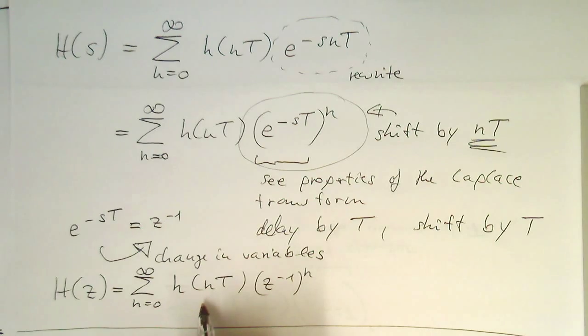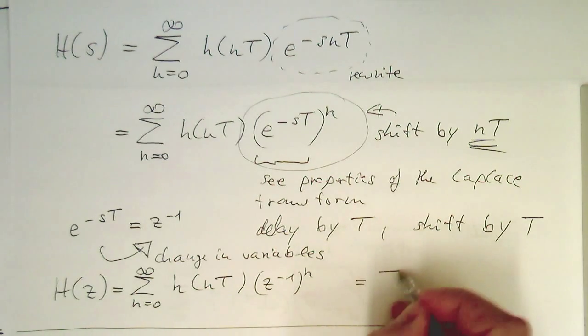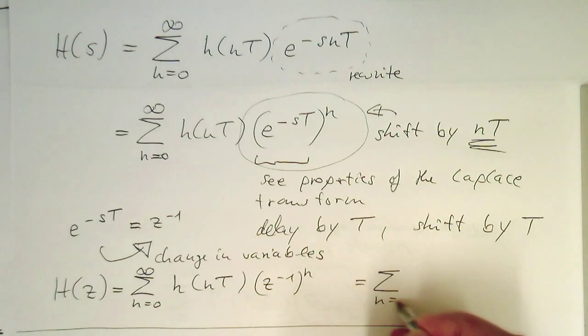Now, usually, if we have a digital, this is an analog sequence here. In this case, if we have a digital sequence, we just write n equals zero to infinity, h(n), and then,